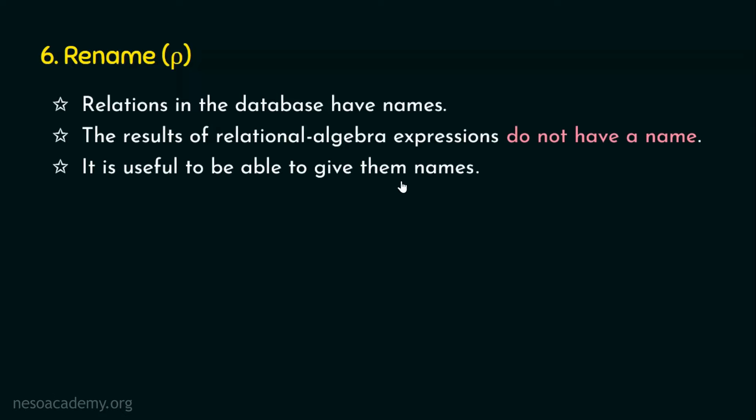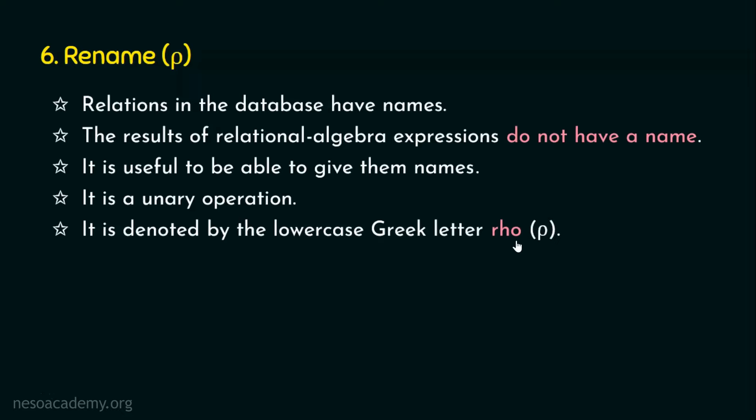In simple terms, when we write a relational algebra expression, the expression will be evaluated and we will get a relation as output. That output relation will not have a name by default, and hence we want to give the result of the relational algebra expression a name. That is why we have the rename operation in relational algebra. What type of operator is rename? It is a unary operation because it takes only one input — an expression — and that relational algebra expression gives an output table, which is then fed as input to the rename operation. The rename operation is denoted by the lowercase Greek letter rho.